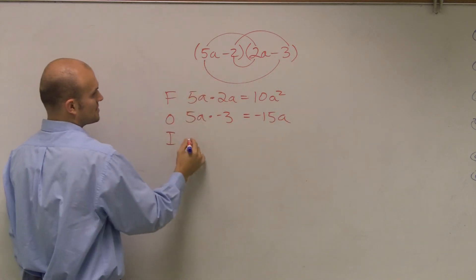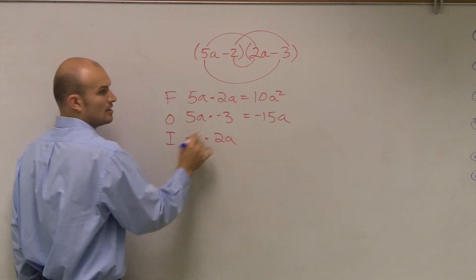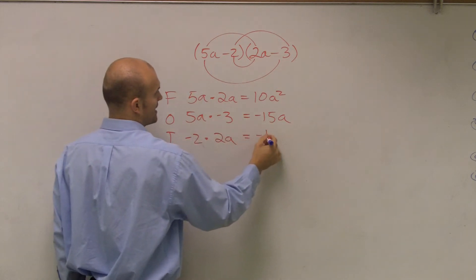Inner terms are going to be negative 2 times 2a, multiply my numbers, that's going to provide me a negative 4a.